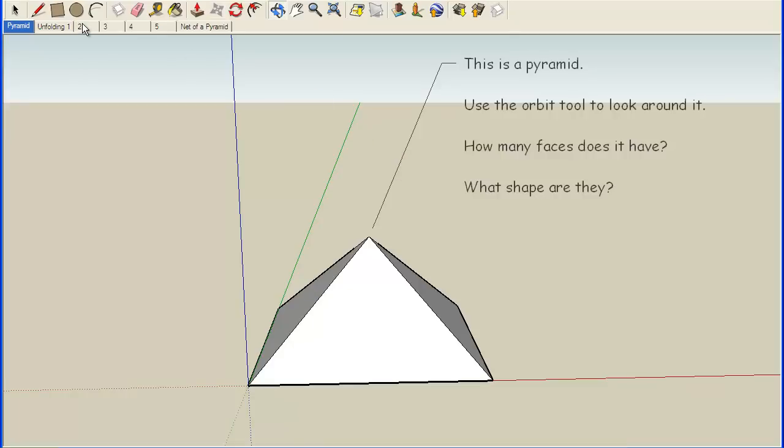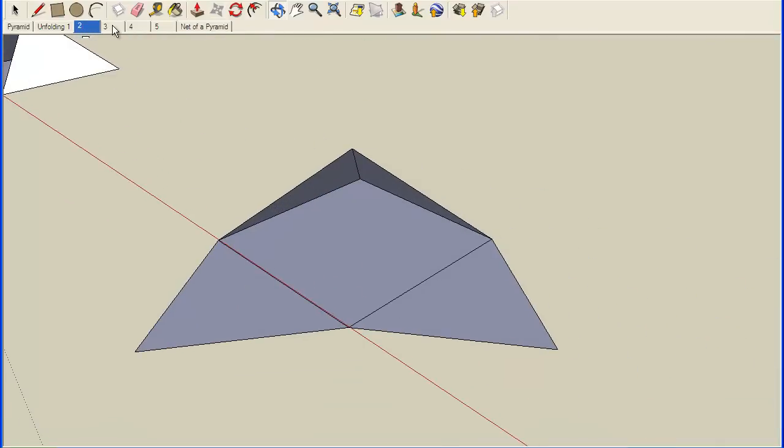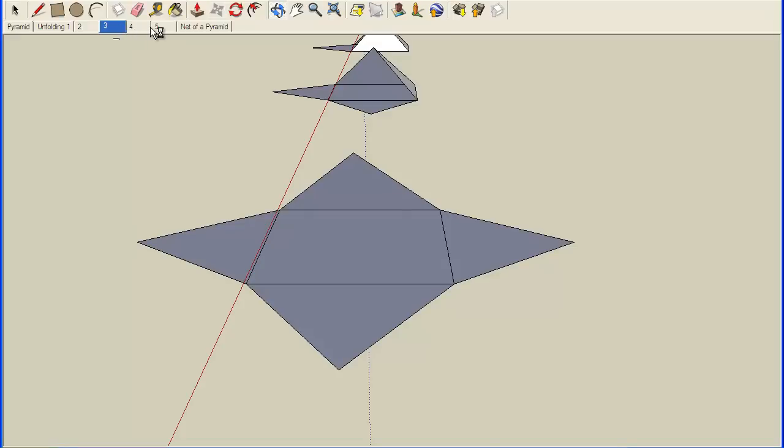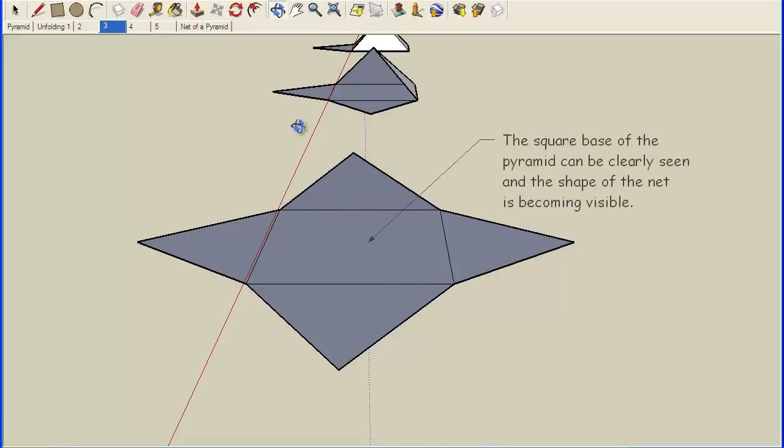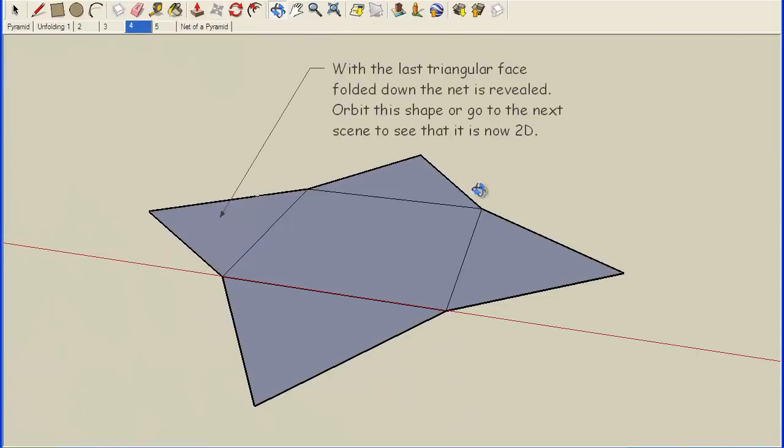I'm going to unfold this pyramid a little bit so you can see all the triangles come together. This is what our pyramid looks like if we pull it apart. We have four lateral faces that are all triangles. You can see they're isosceles triangles.